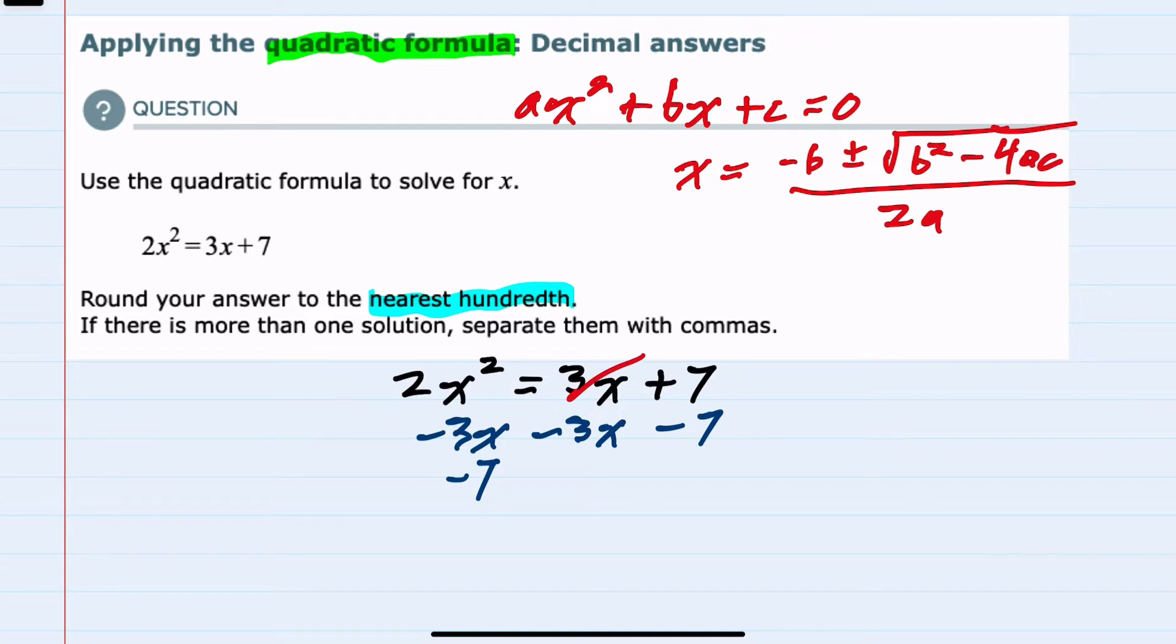That would then cancel everything on the right, leaving me with zero, and on the left-hand side we have 2x² minus 3x minus 7 equals zero.